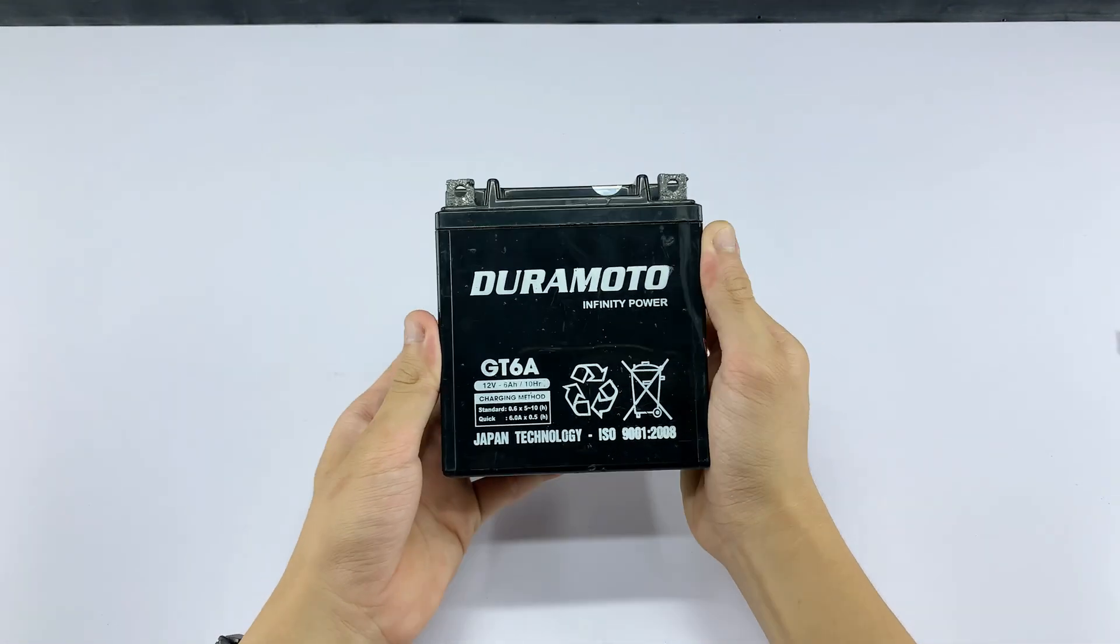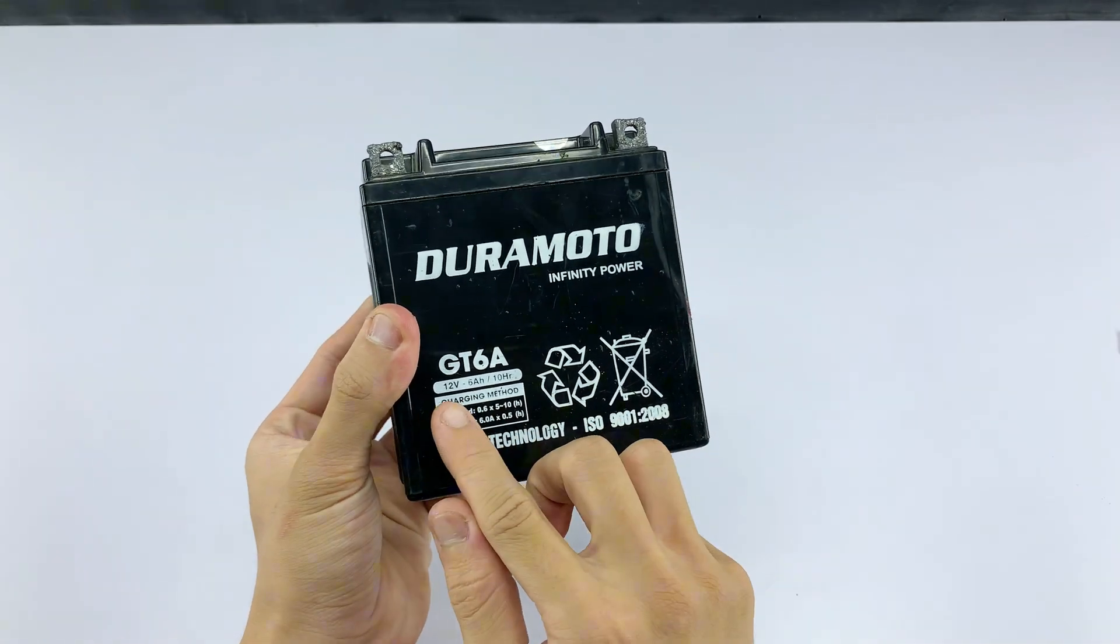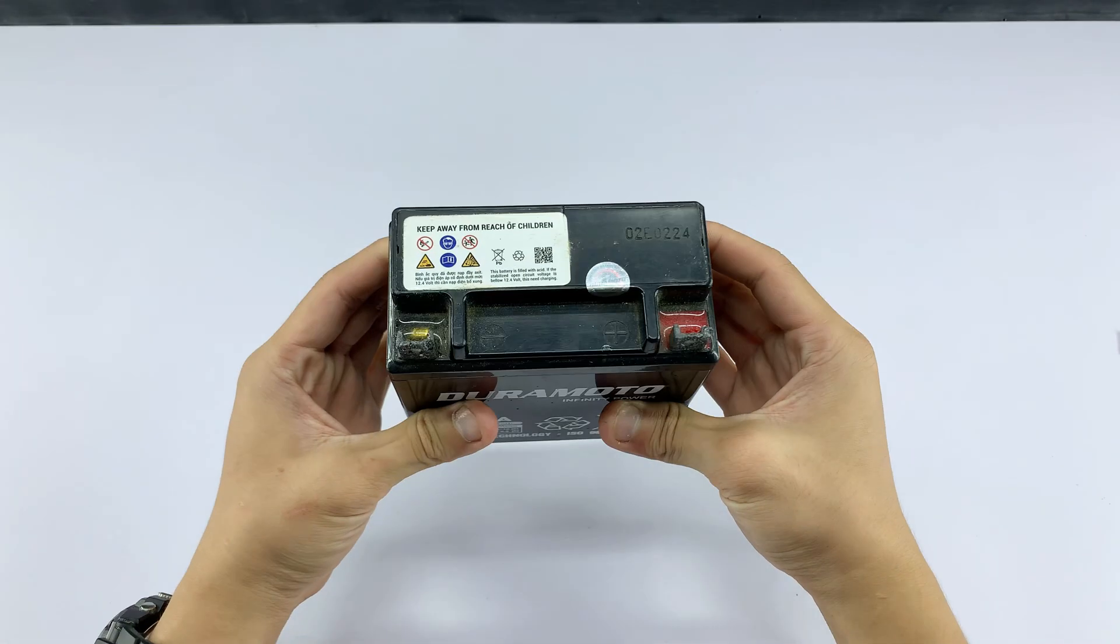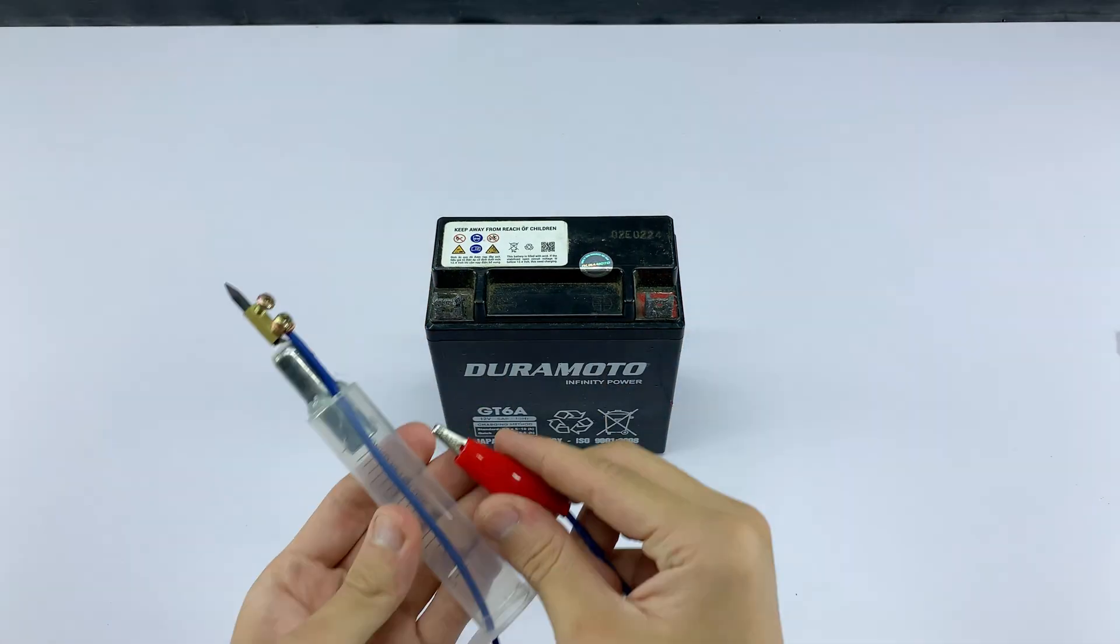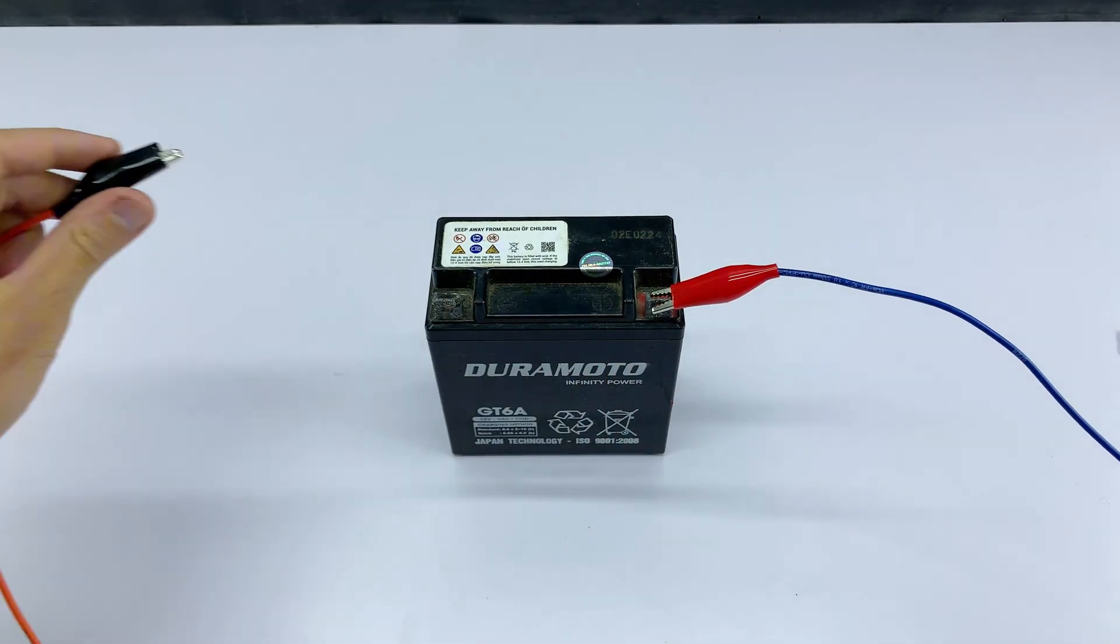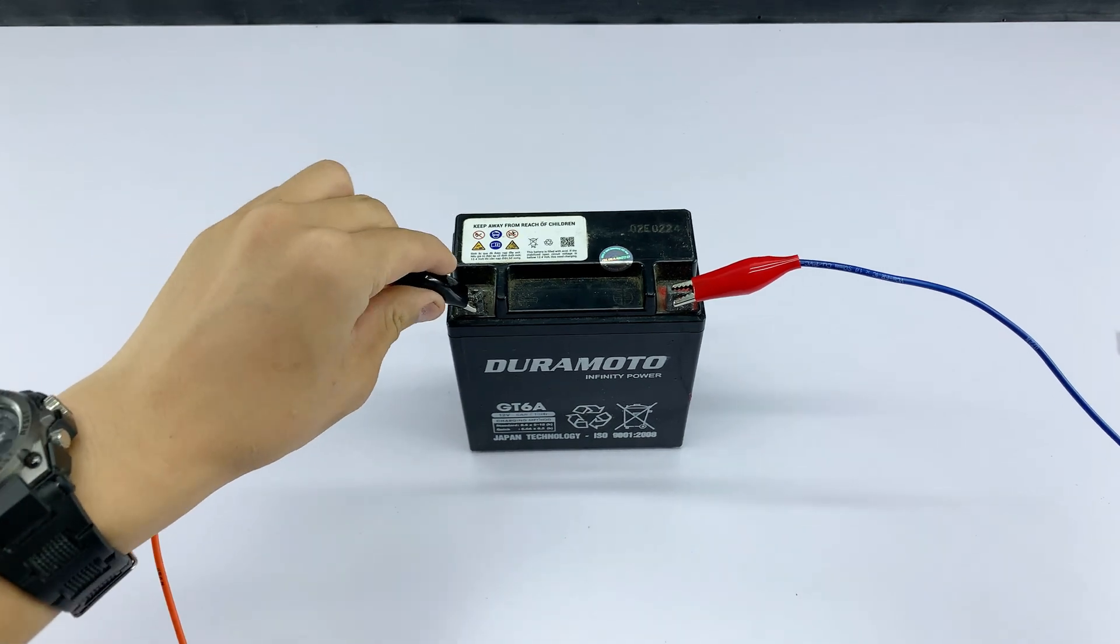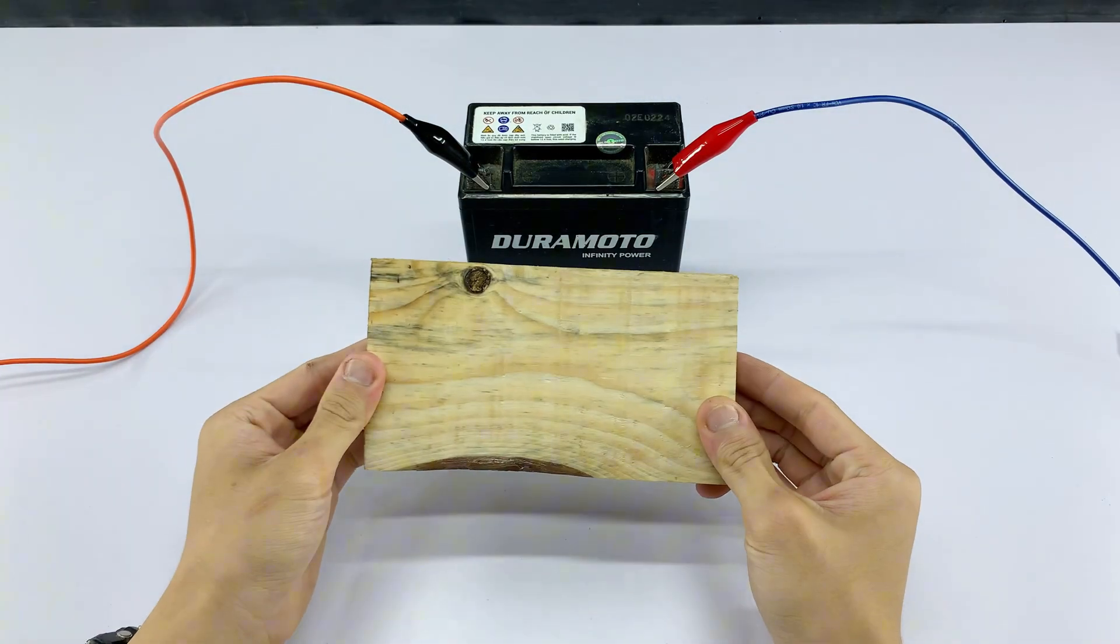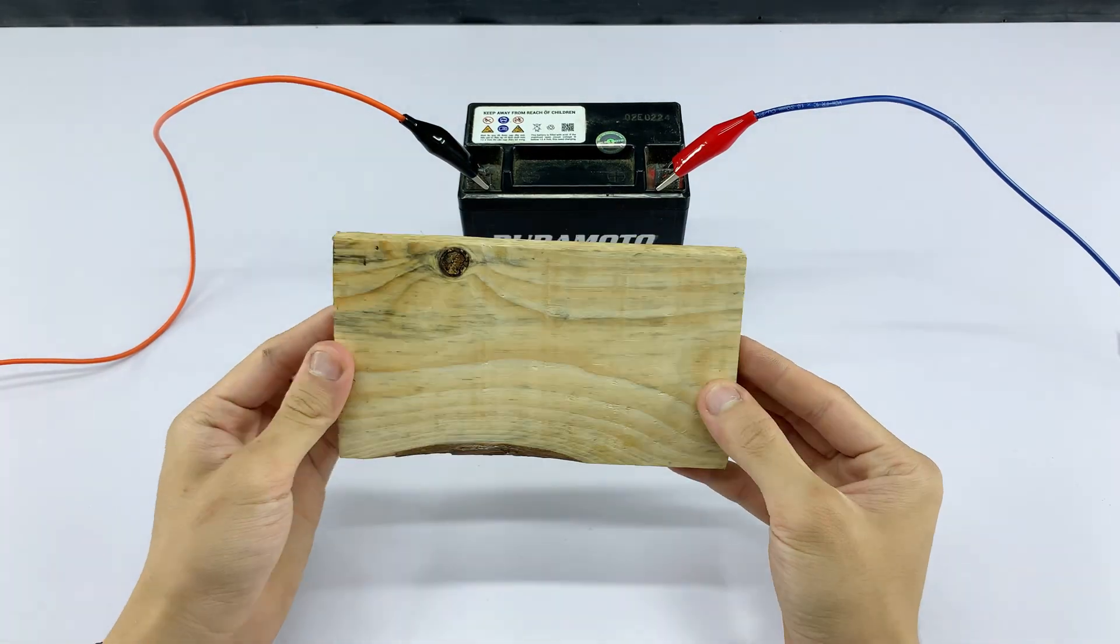With our custom soldering tool ready, I'm preparing a power source by car battery. I'm connecting the blue wire to the positive terminal of a 12V battery and the orange wire to the negative terminal. This completes the circuit and provides power to whatever tool we connect.